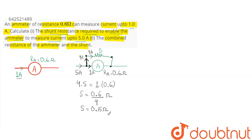This is the first part answer: the shunt resistance which must be connected is 0.15 ohm. As we know, shunt resistance is a small resistance connected in parallel to the ammeter so as to increase its current measuring capacity. First it was measuring 1 ampere; now the whole setup measures 5 ampere.